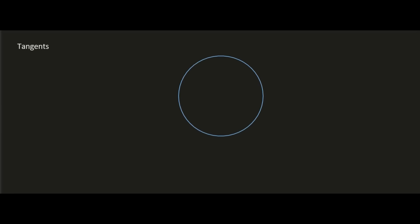In this lesson we're going to talk about tangents. If I have a circle and I draw a tangent to it at a certain place, it would look like this — it would touch the circle at exactly one point.